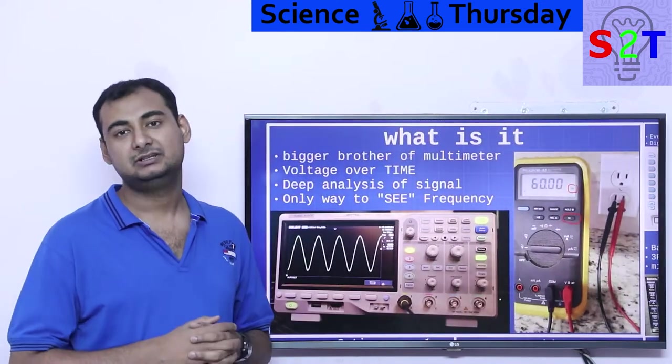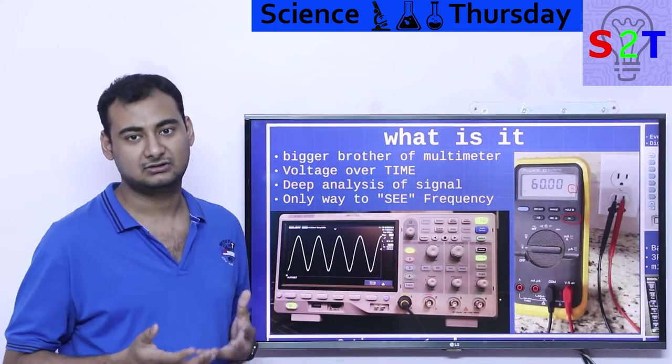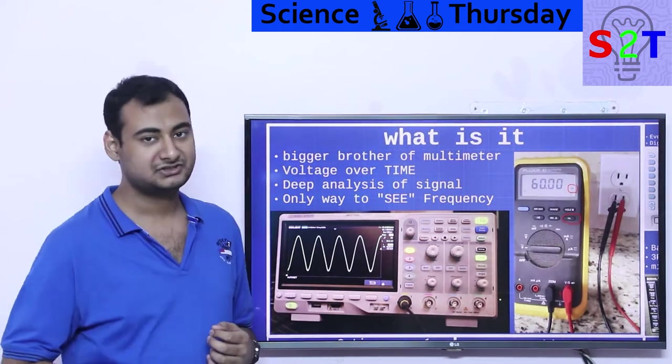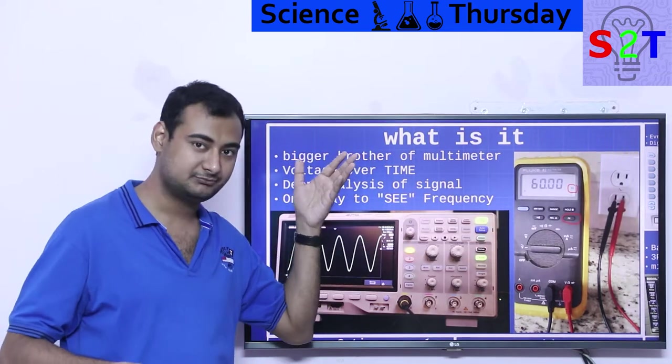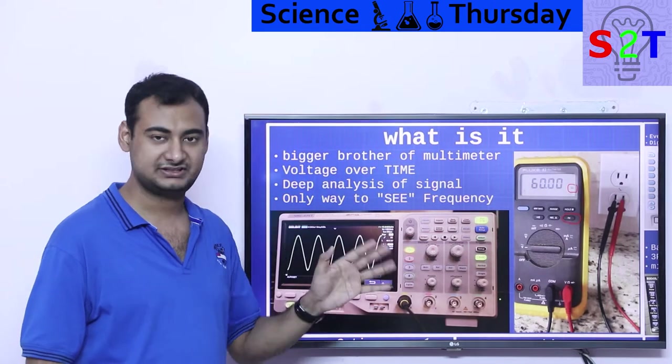So we already looked into multimeters. So what is this? This is exactly a bigger brother of multimeter because multimeters can show voltage very well. They're quite adapted at doing that and they're awesome at that - cheap, best, reliable, safe, all that.